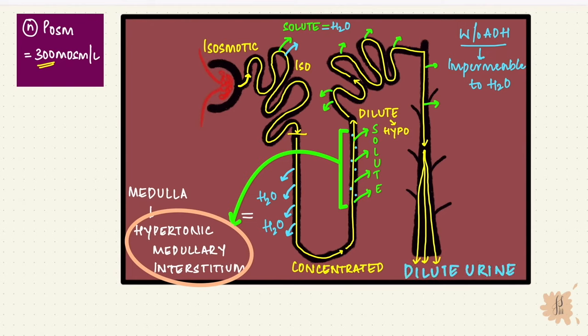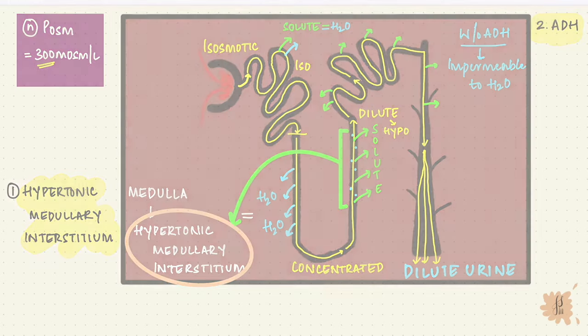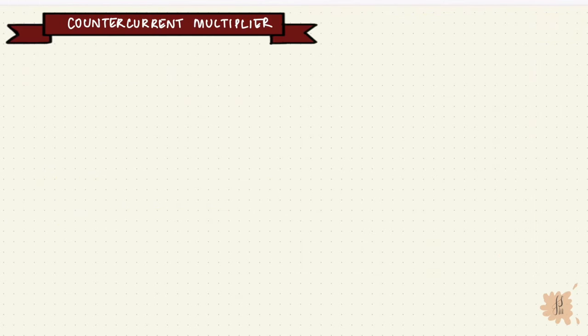To conserve water, the kidneys concentrate urine. So that requires two things. First, a hypertonic medullary interstitium. Second, the antidiuretic hormone. So with that background, we're now going to look at the countercurrent mechanism.